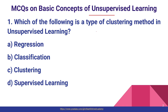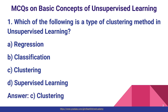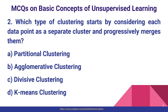Question number one: which of the following is a type of clustering method in unsupervised learning? Options are regression, classification, clustering, and supervised learning. Clustering itself is the answer — option C. Which of the following is a type of clustering method in unsupervised learning? Clustering is mentioned directly, so we go with option C.